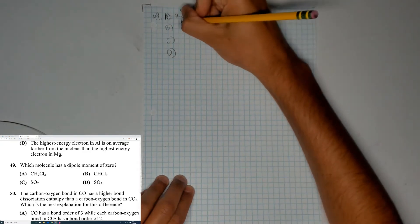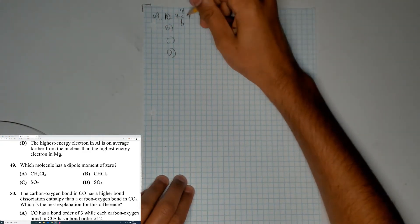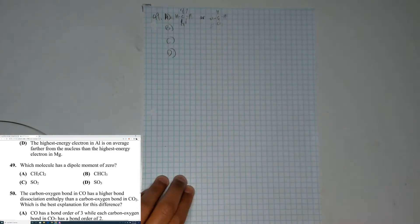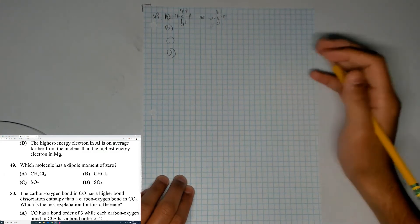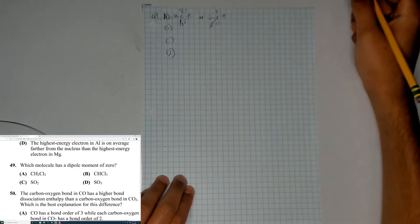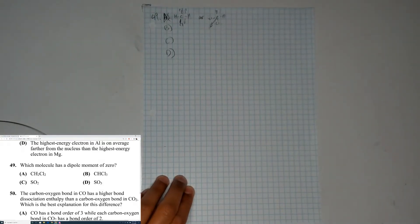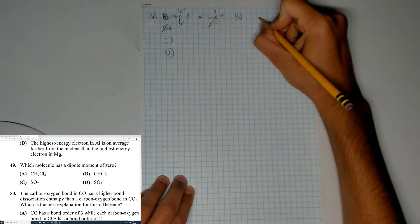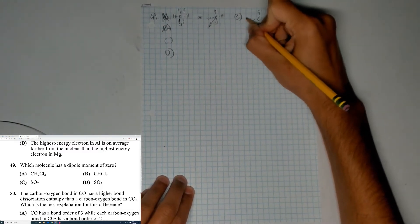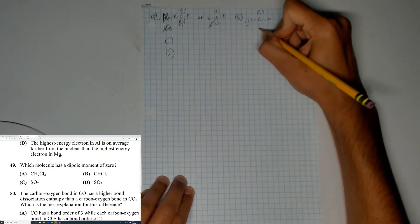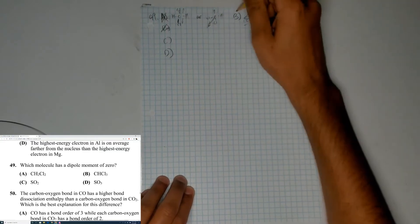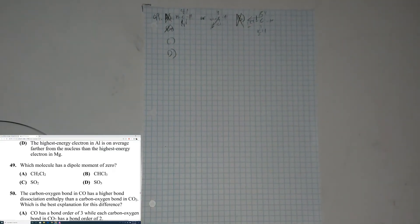So this one over here has a dipole moment of zero because the atoms are symmetrical and the dipole vector cancels out. This one, the dipole vector faces this direction, so you can cross out CH3Cl. The little structure — let me just write it over here — the dipole vector faces in this direction, so we can easily cross out B.